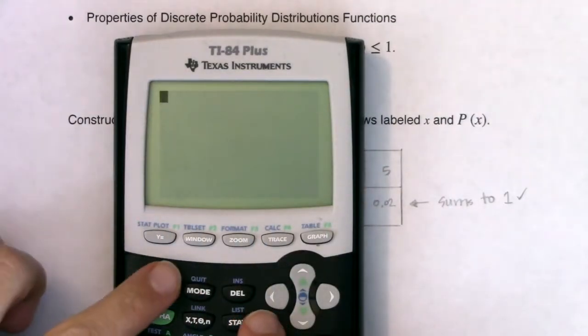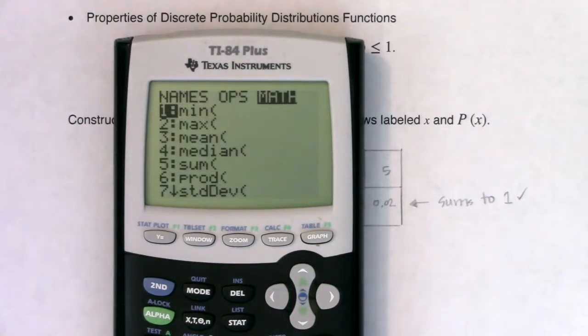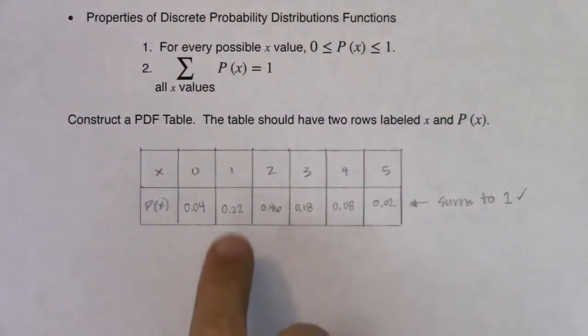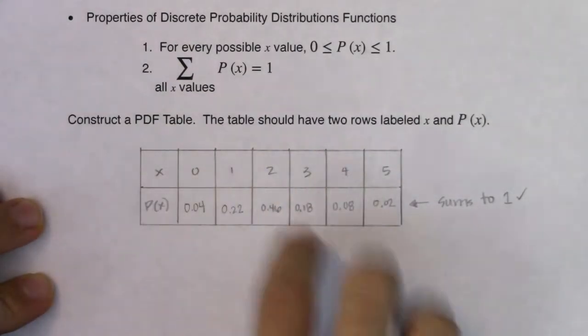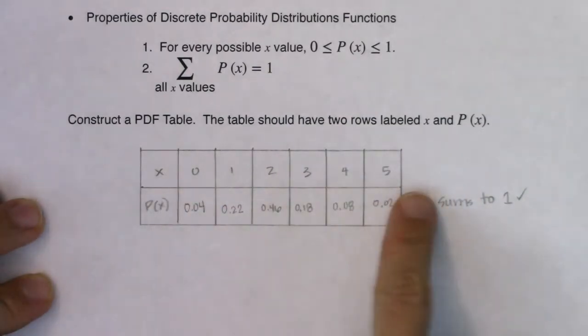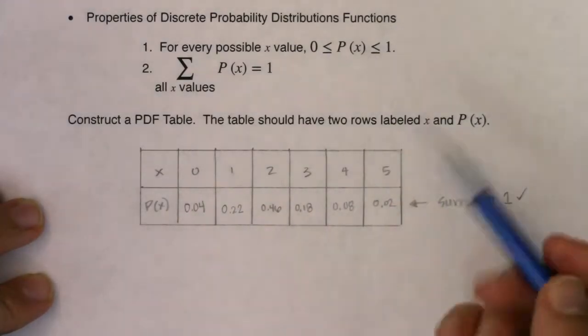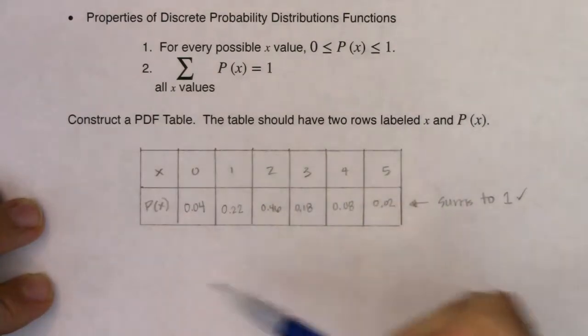If I didn't want to type all of this out, if you hit second in stat and go over to math, use your right arrow key, hit option five, it says sum. My relative frequencies were in L2 and they do sum to one. So this is it. This is a PDF. A PDF table always has two rows. The top row is labeled X and the bottom row is labeled probability of X. These numbers have to add up to one - they specifically have to be numbers between zero and one and they have to add up to one. Those are the two properties you need to have a legitimate PDF.